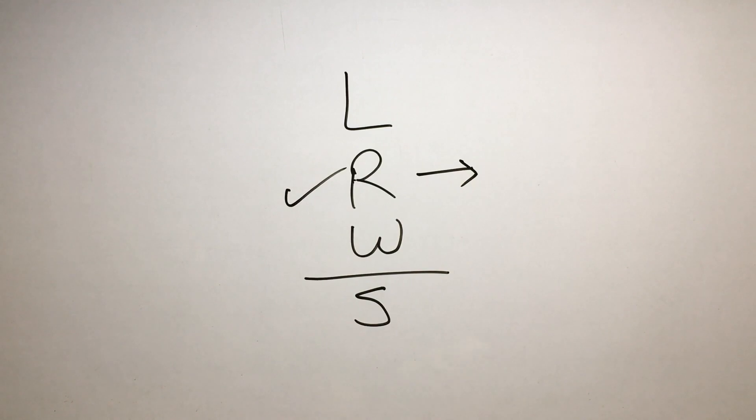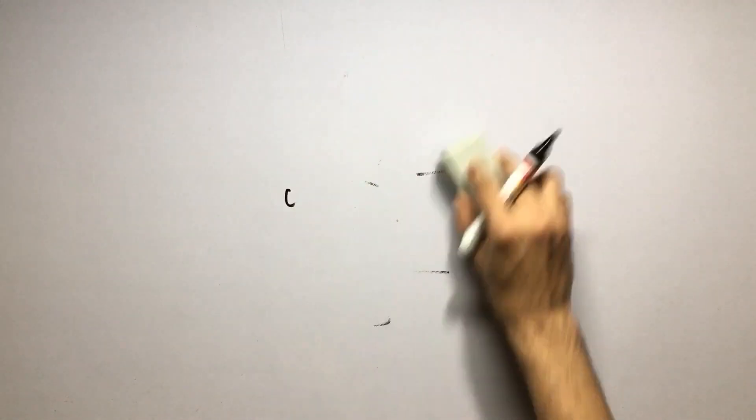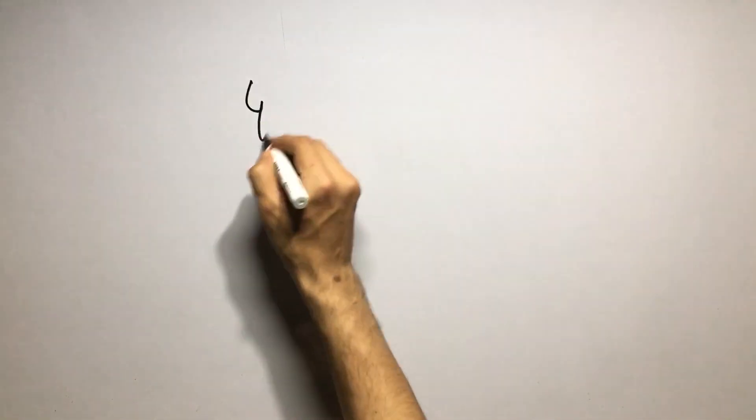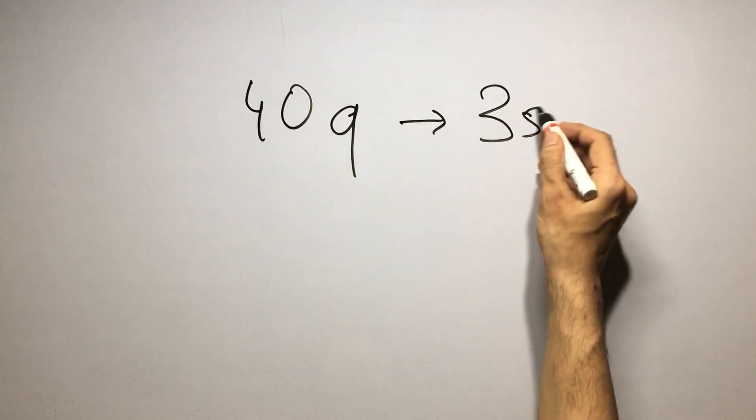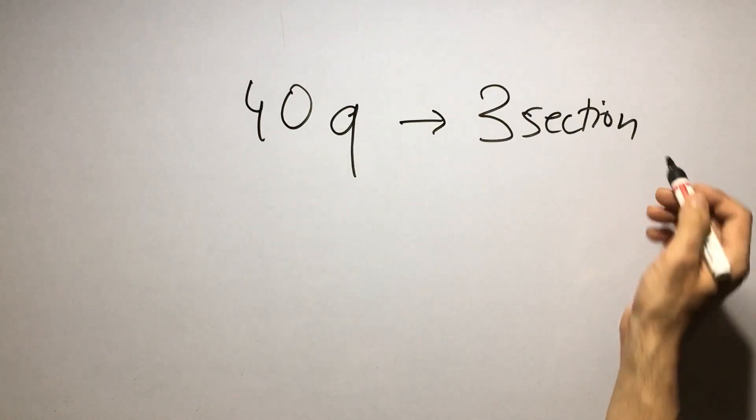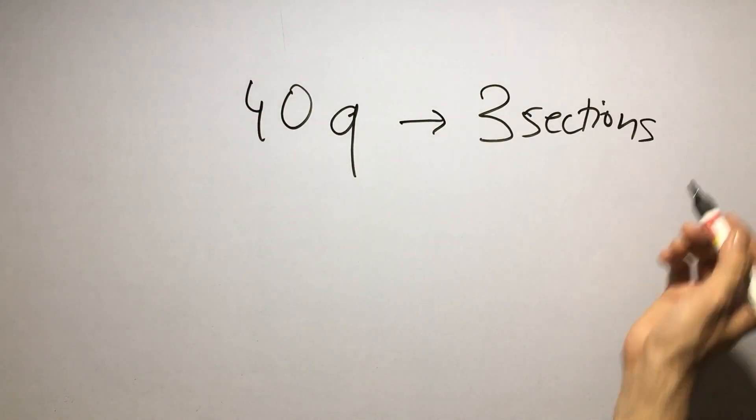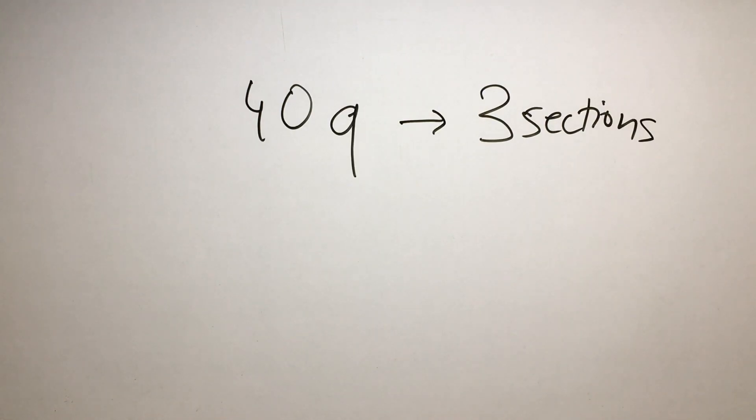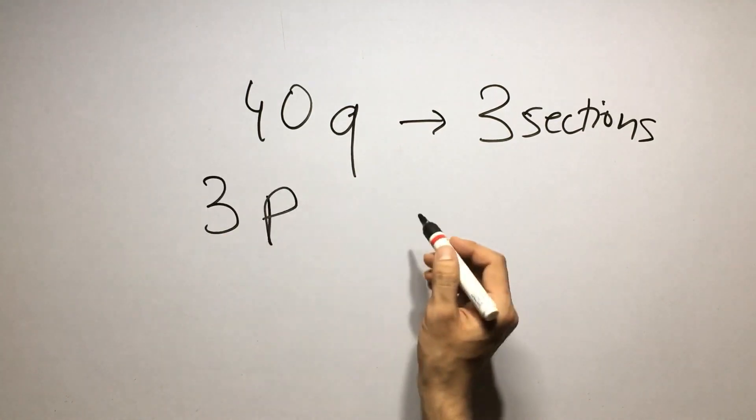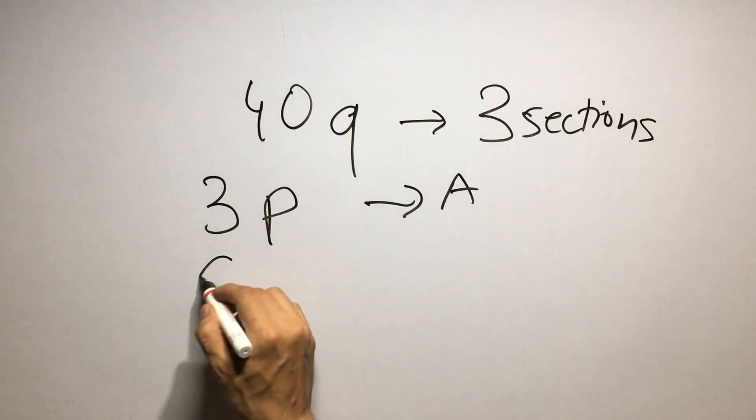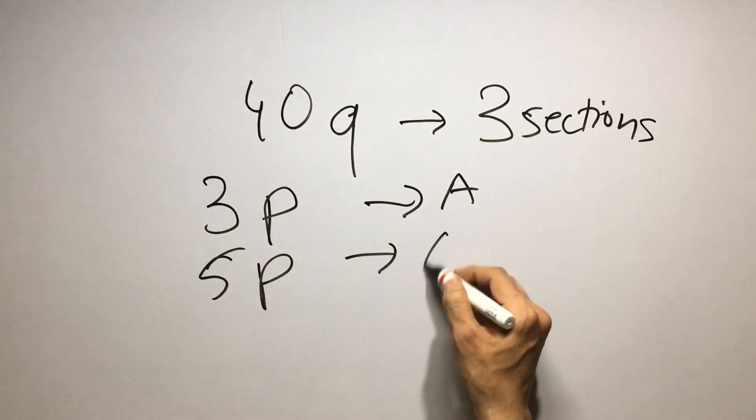Secondly, let's see what happens in reading. There are total 40 questions in reading. And they are divided in three sections. They are divided in three sections for a reason because they have to set in paragraphs, right? And these paragraphs together form passages.